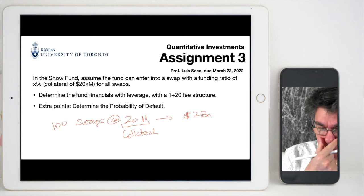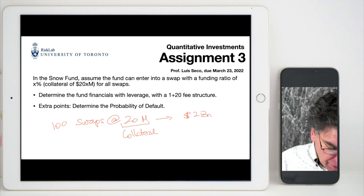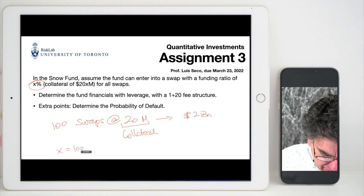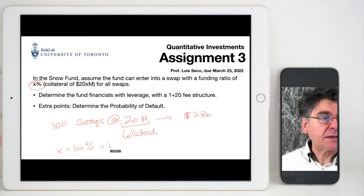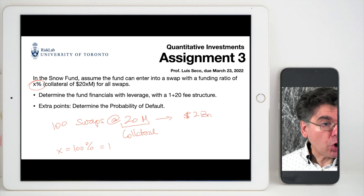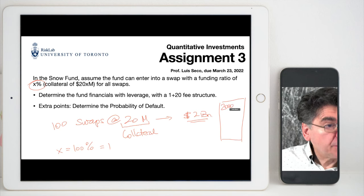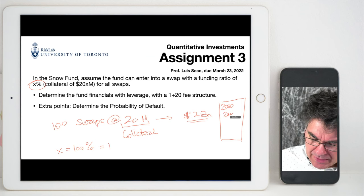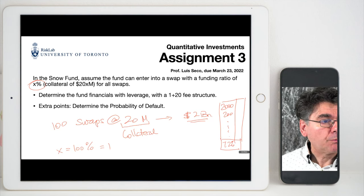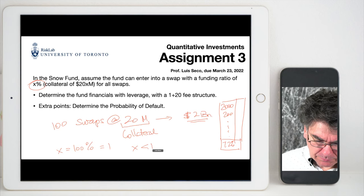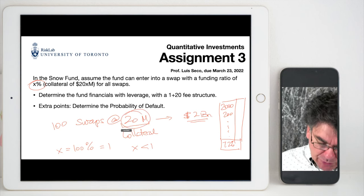In this assignment I'm assuming there is a funding ratio of x percent. If x equals 1, or 100%, we are in the same situation as in the lecture notes — the fund needs all 2 billion dollars. If the funding ratio x is smaller than 1, then I don't need 20 million; I will need 20 times x million, which is a smaller amount.